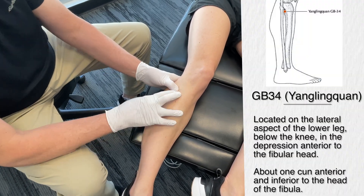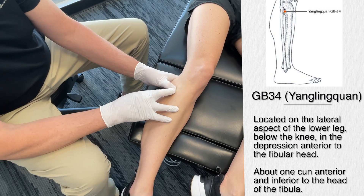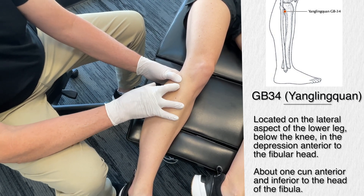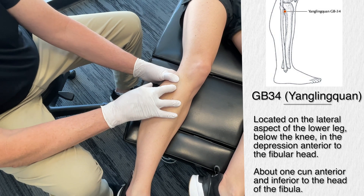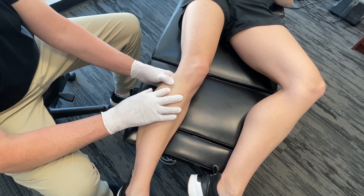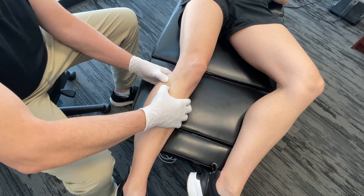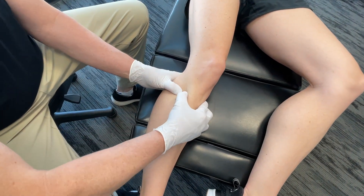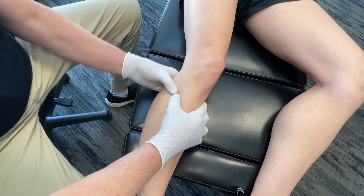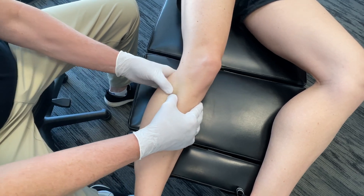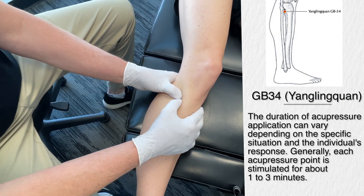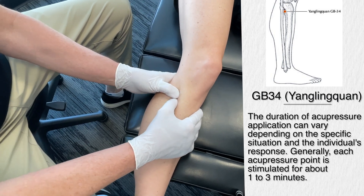Gallbladder 34 is located on the lateral aspect of the lower leg, below the knee, in the depression anterior and inferior to the fibular head. Here's the head of the fibula — just below that is the point. I'm going to stimulate this point — not just rub the area, but get in there enough to actually make a change. Starting with this leg point, we're dealing with a fascial expansion of the shoulder — a very common acupuncture point for treating shoulder injuries.